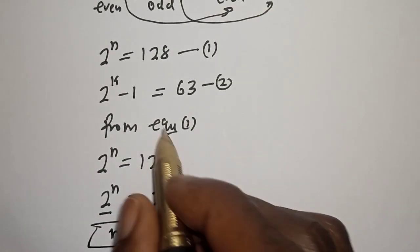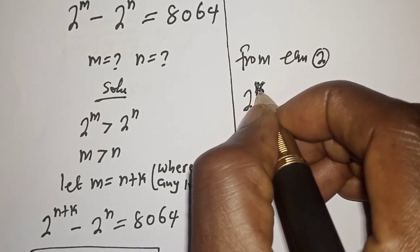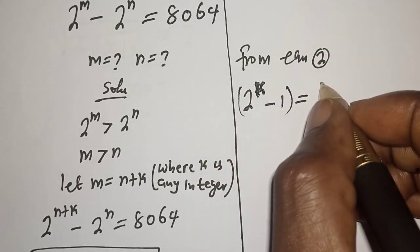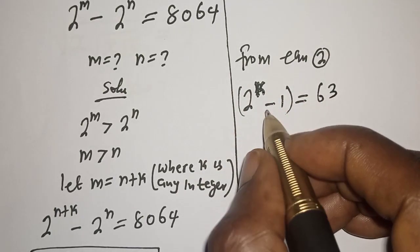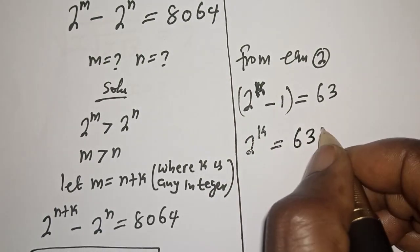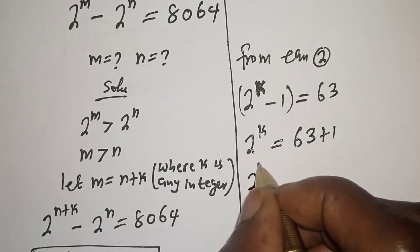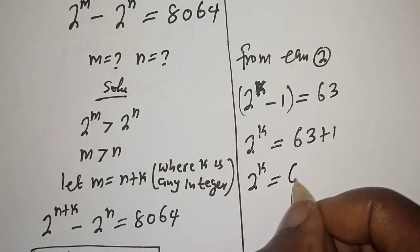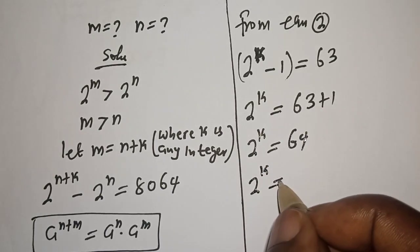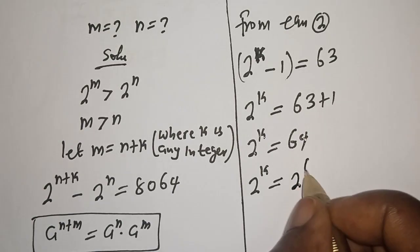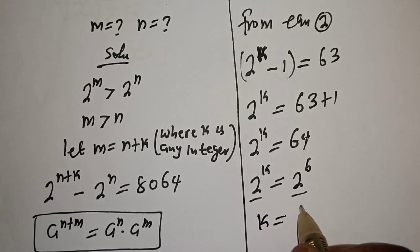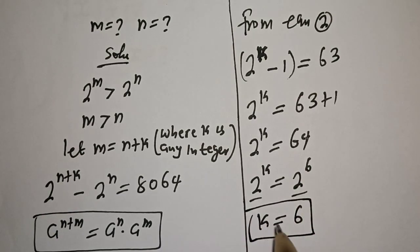From equation 2: 2 raised to power k minus 1 is equal to 63. So 2 raised to power k is equal to 63 plus 1, which is 64. Since 64 is equal to 2 raised to power 6, and they have the same base 2, therefore k is equal to 6. This is the value of k.